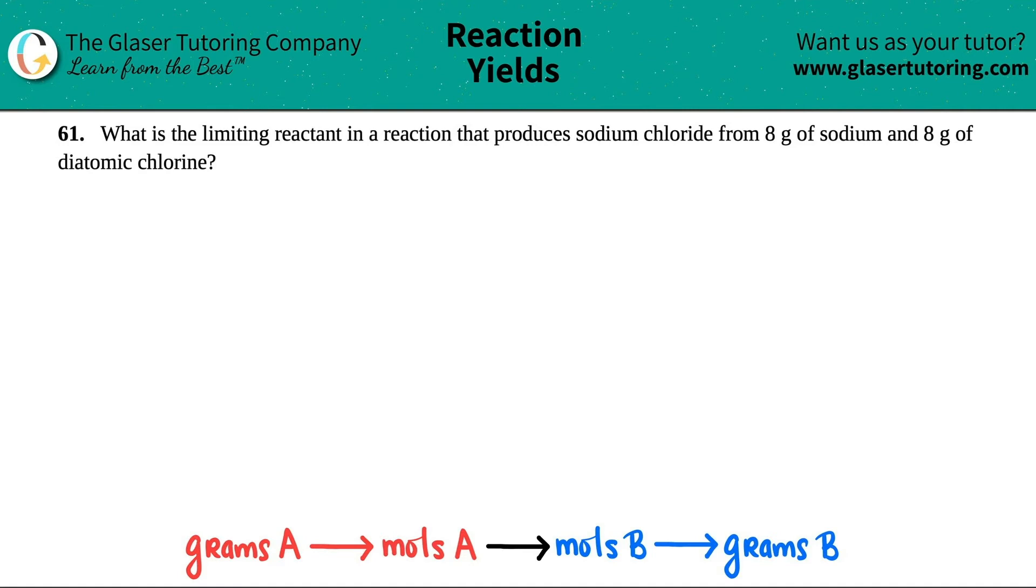Number 61, what is the limiting reactant in a reaction that produces sodium chloride from 8 grams of sodium and 8 grams of diatomic chlorine?